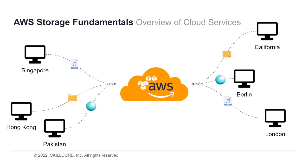Now, what if we wanted to get some files? California, Berlin, London, Singapore, Hong Kong, and Pakistan all have access to all the files within the cloud. Say California wanted to download the MP3 — they got it. If Berlin wanted the other MP3, they got it. If London and Pakistan wanted the normal files, they got them. And Hong Kong and Singapore got the objects. That's one of the major benefits of working with cloud: you have access to all the files from virtually any location in the world.